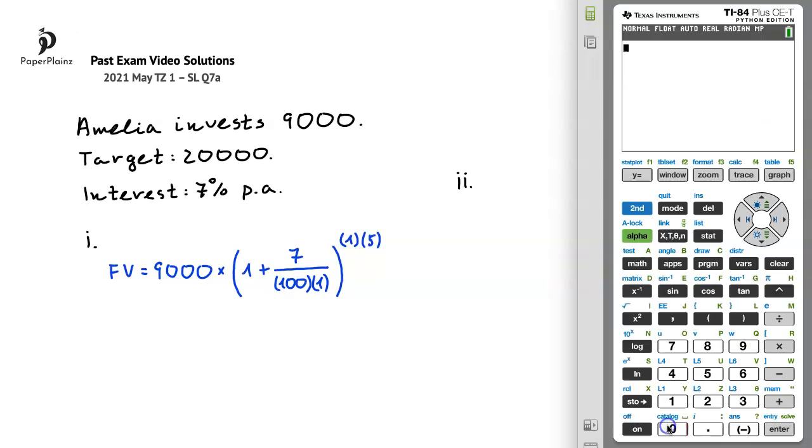Let's use our calculator. We have 9,000 times, open parentheses, 1, plus, and here I will enter a fraction by pressing alpha, y, and enter. In the numerator, we have 7. And in the denominator, 100 times 1, so simply 100. Then we need to close the parentheses and raise it to the power of 1 times 5, so simply 5.